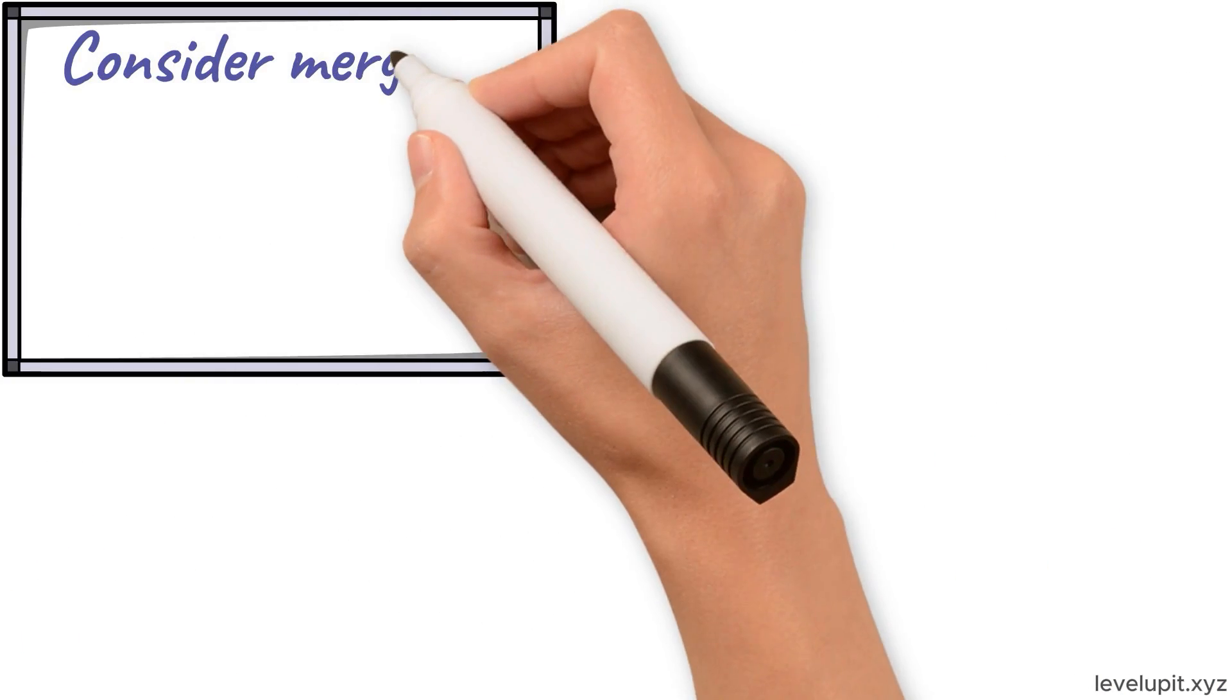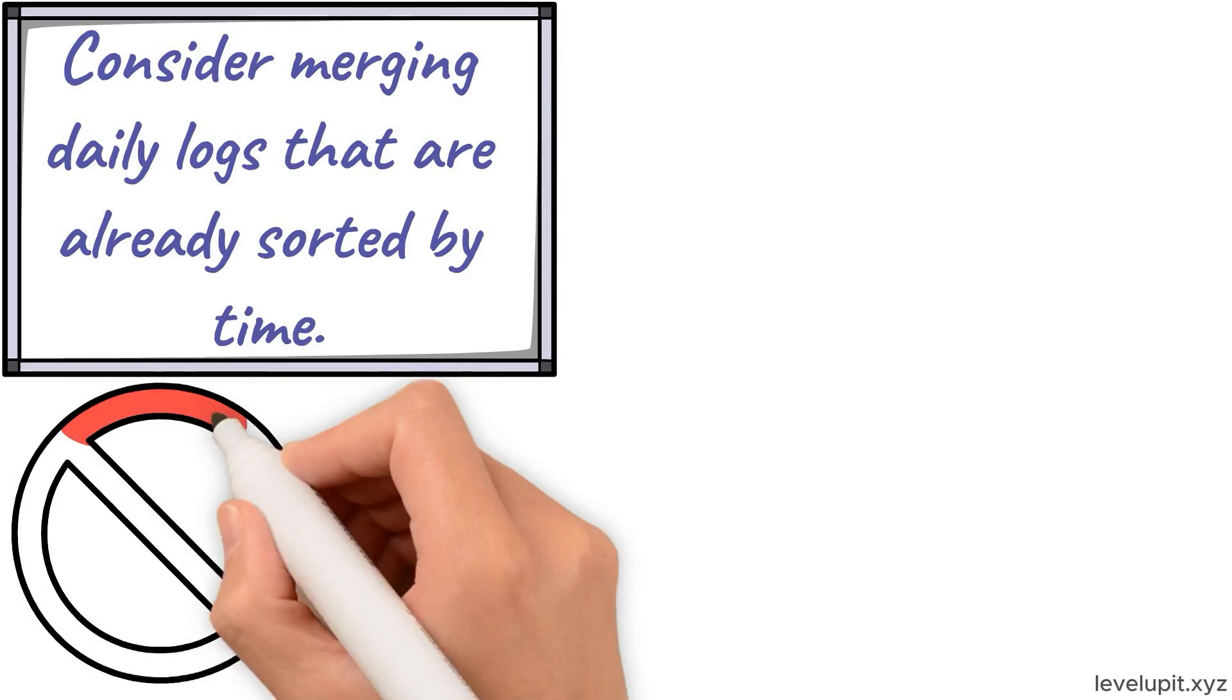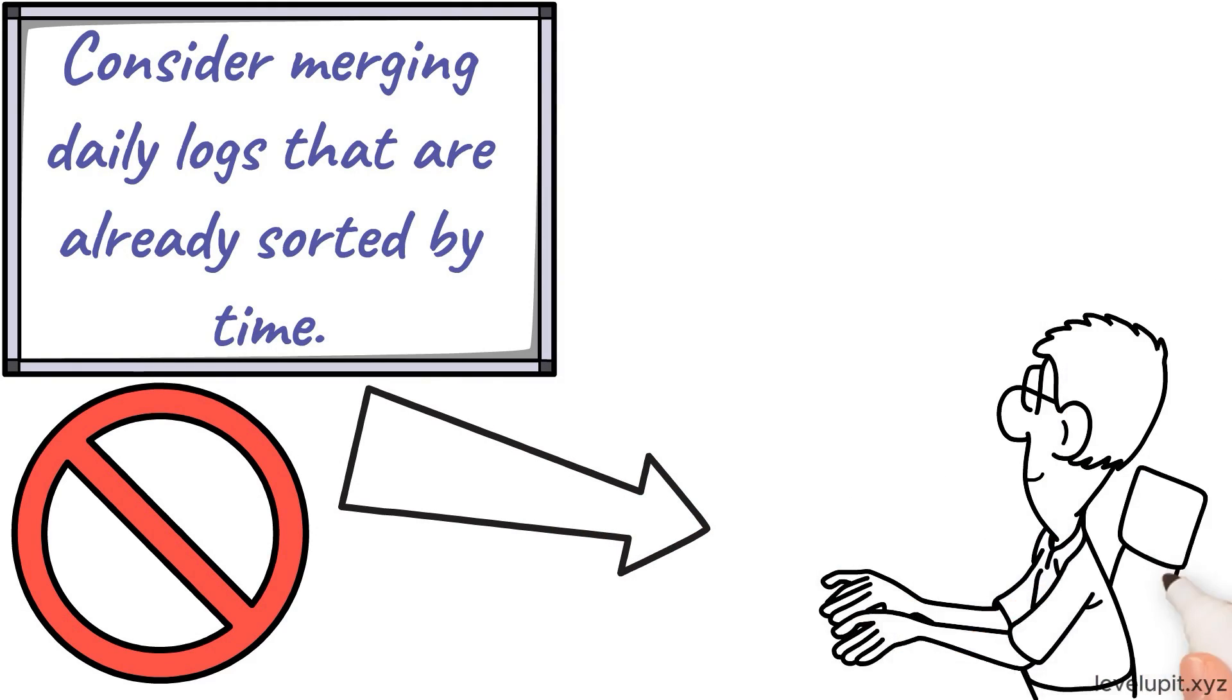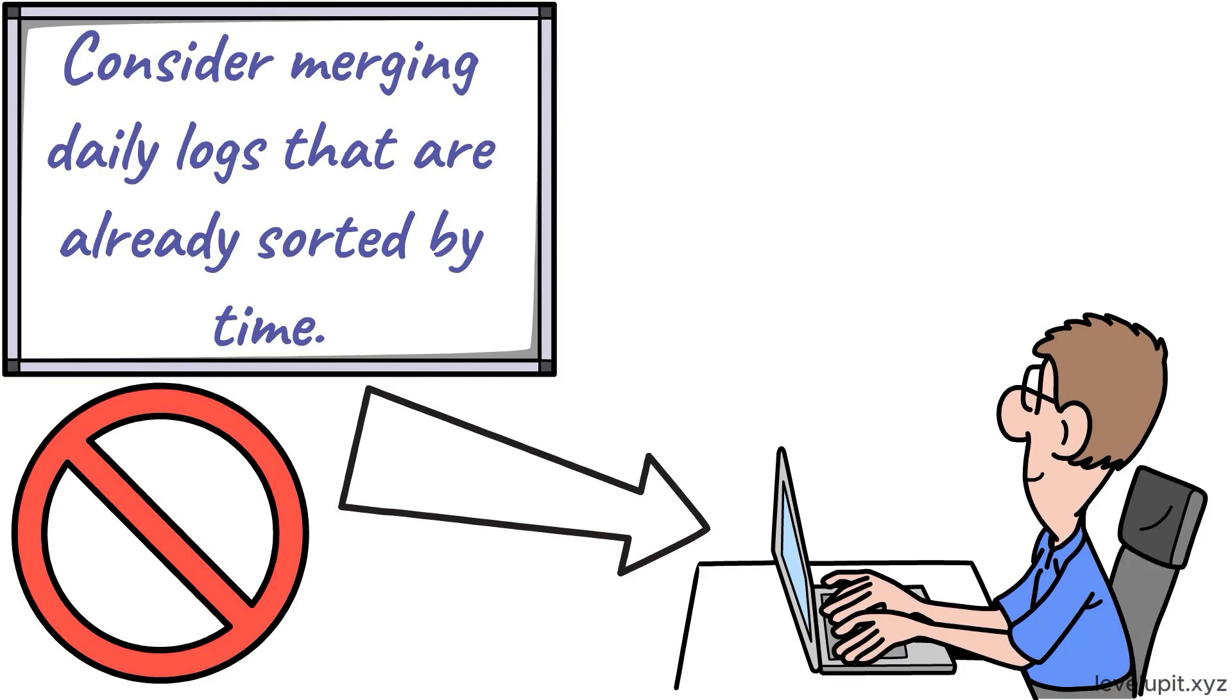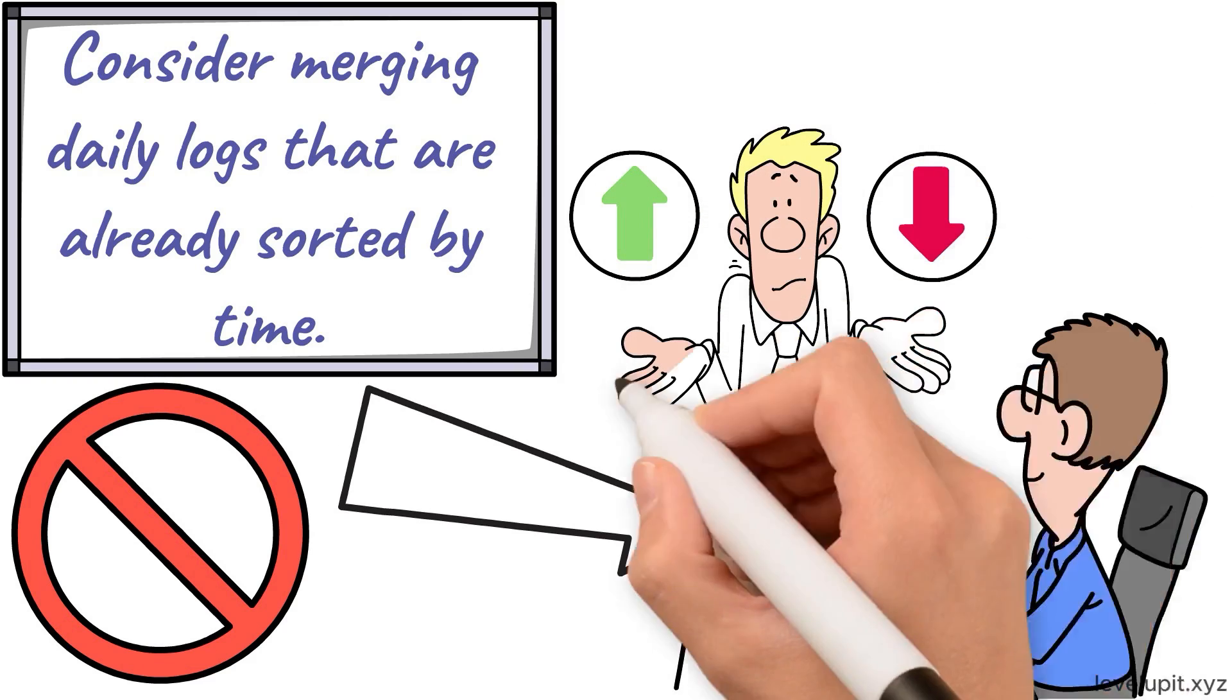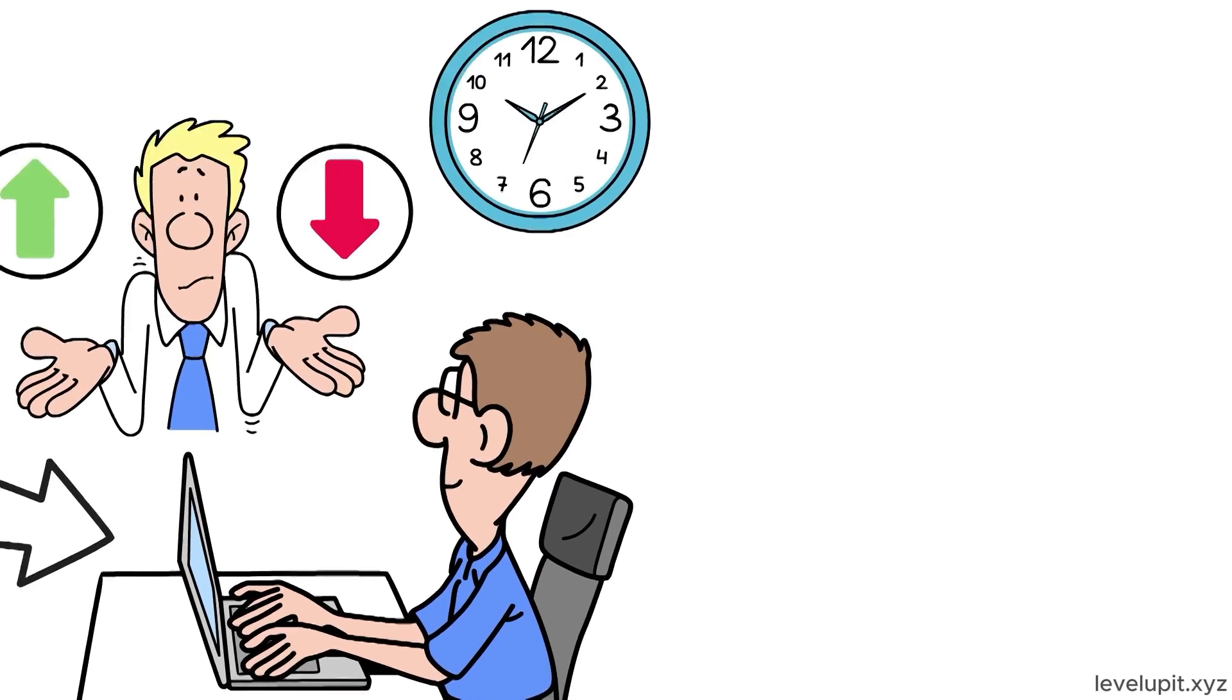Consider merging daily logs that are already sorted by time. You do not need to resort everything from scratch. This is a perfect merge-sort picture. Each day's log is a sorted list. Merging two days uses the same compare fronts and pick the smaller timestamp idea. If you have many days, keep merging pairs until all are combined. The merging is linear in total size and very efficient.